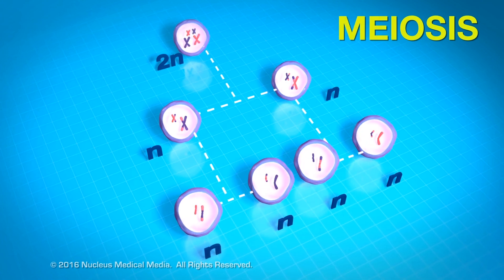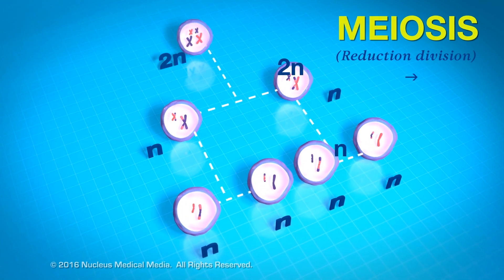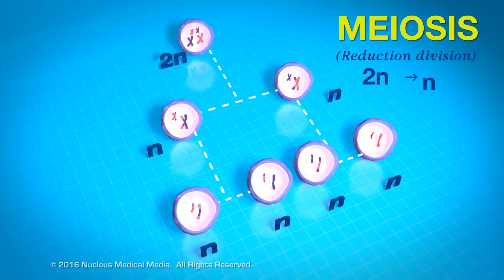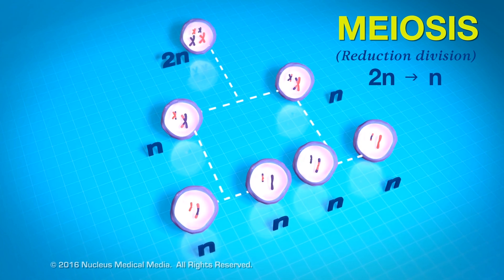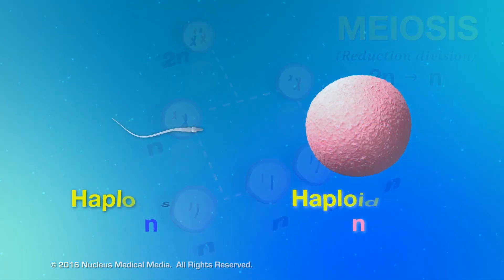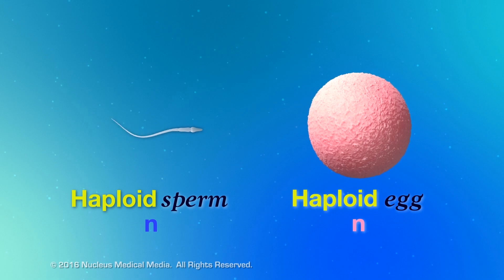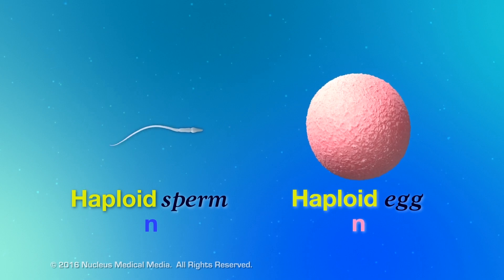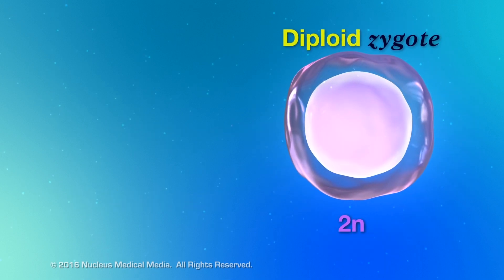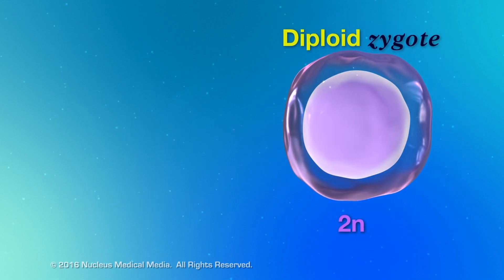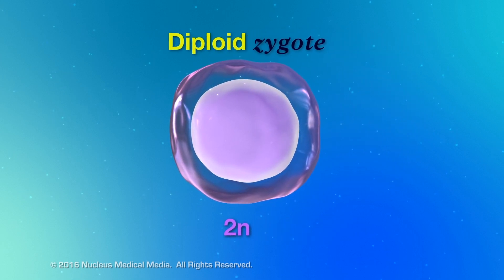For this reason, meiosis is also called reduction division. It reduces the total chromosome number in half. So when the haploid sperm cell and haploid egg cell unite to form a zygote during fertilization, the diploid number of chromosomes is restored in the resultant zygote.